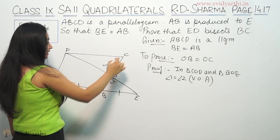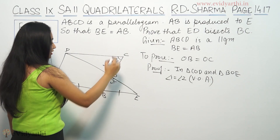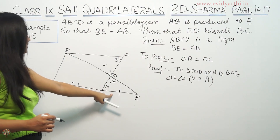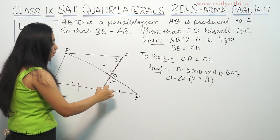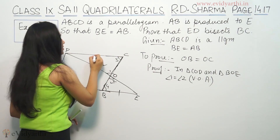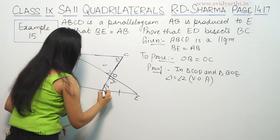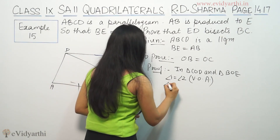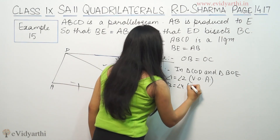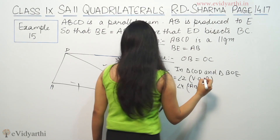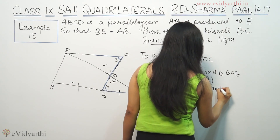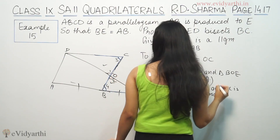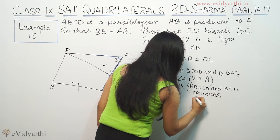And if these two lines are parallel and this is a transversal, suppose this is angle 3 and this is angle 4. So angle 3 is equal to angle 4 because AB is parallel to CD and BC is a transversal. Therefore angle 3 is equal to angle 4 — alternate angles are equal.